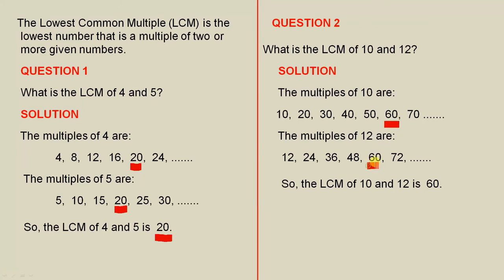That is the lowest number occurring in each of those groups — it has to be the same number. That means that 60 is the lowest number that 10 and 12 will divide into evenly.